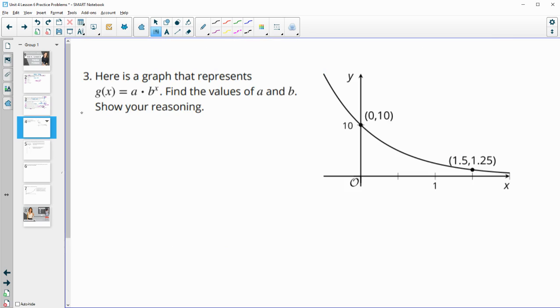Number three, this graph represents the function G of X equals A times B to the X, find the values of A and B. So we see that we have at zero, this is at 10. And then at 1.5, this is at 1.25.